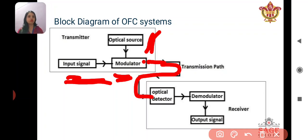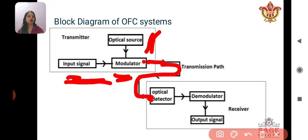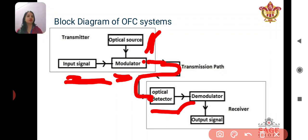The third part is the receiver. The optical signal arriving at the receiver is detected by the optical detector. The demodulator then processes the optical signal, separating it from the light carrier.